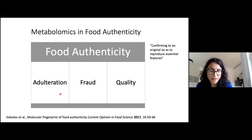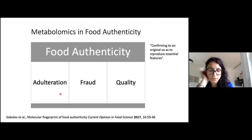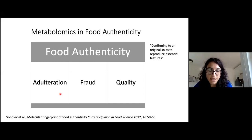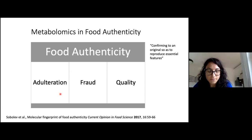Authentic means conforming to an original so as to reproduce essential features. From a legislation point of view in the agri-food sector, this general definition has been translated into a set of rules relative to different aspects concerning authenticity. A foodstuff can be called authentic only if it is produced according to precise procedures, and all elements of food production and supply chain respect precise criteria. On the molecular level, to be authentic means to conform to the chemical composition proper for the specific foodstuff. So food authenticity deals with other concepts like adulteration, fraud, and quality.